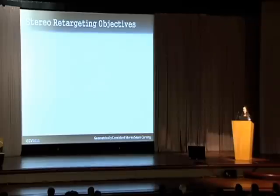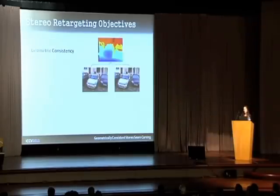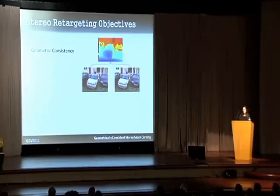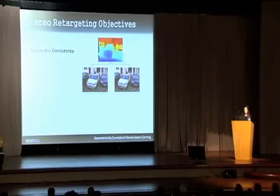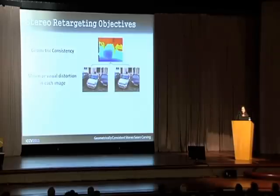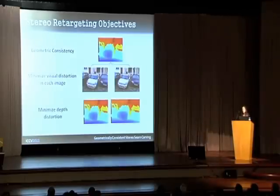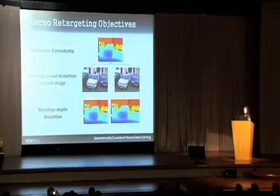We extend single image seam carving to work on stereo, and we have three objectives. The first and most important is to achieve geometrically consistent results — the output pair must have a feasible 3D interpretation, represented by a retargeted 3D scene and a disparity map. Second, as in single image retargeting, we want to minimize the visual distortion in each of the images. Third, we want to minimize depth distortion, meaning the output structure should be as similar as possible to the original.